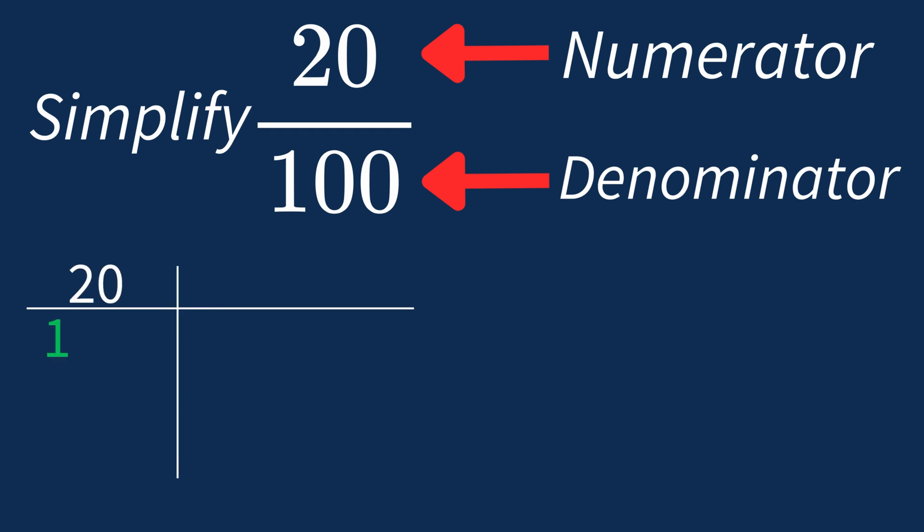For 20, the factors are 1, 2, 4, 5, 10, and 20.